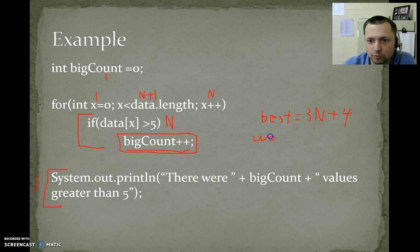Worst would mean that statement we're going to execute every time. So it's in an if that runs n times. So every time the if happened, this would happen. So we'd get one more n. Worst case, it would be 4n plus 4.